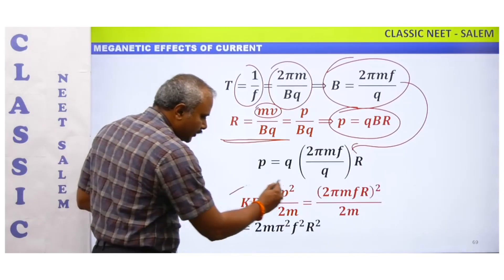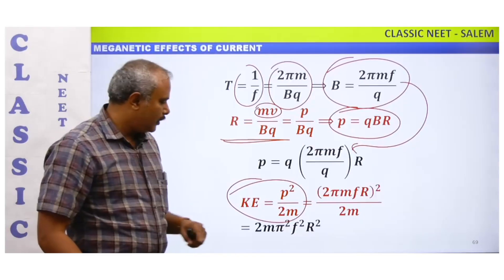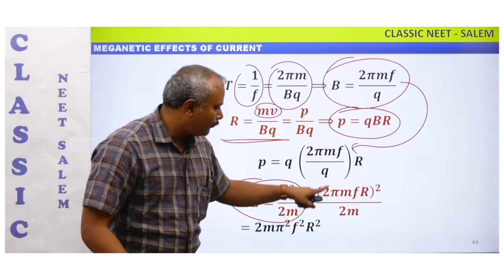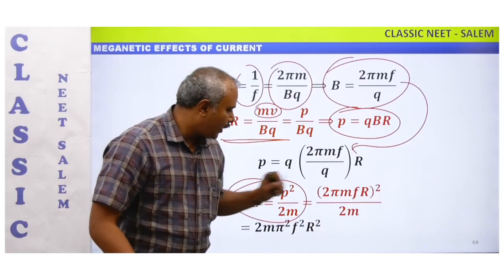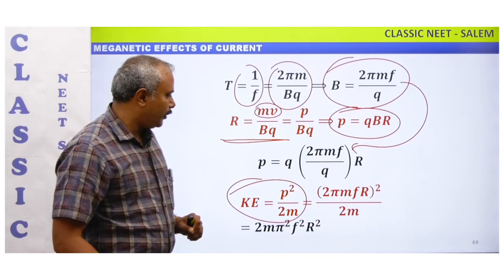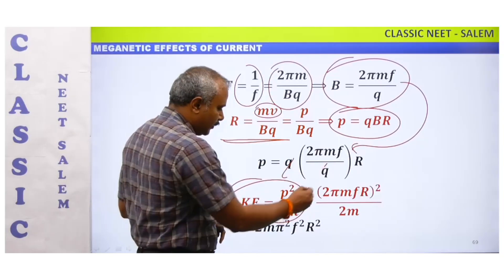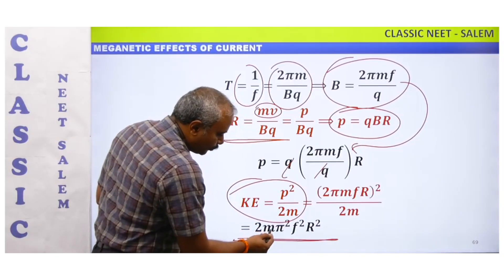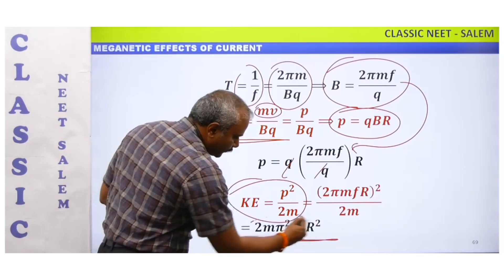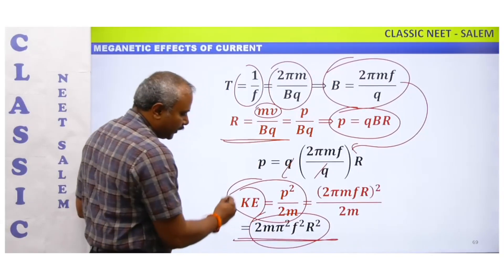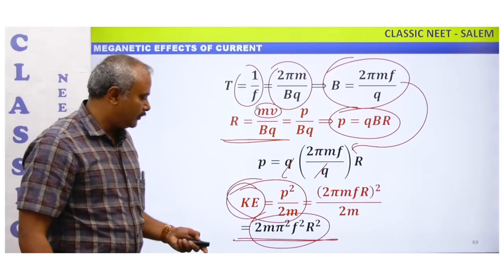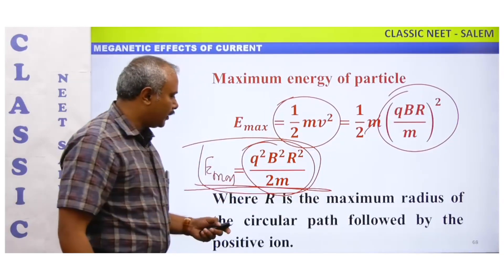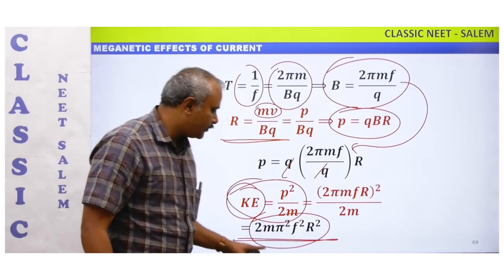The kinetic energy is KE = p²/2m. Substituting p = Bqr = (2πmf)r, we get KE = (2πmf)²r²/2m = 2π²mf²r². This gives the cyclotron kinetic energy in terms of frequency. There are two formulas for cyclotron kinetic energy.